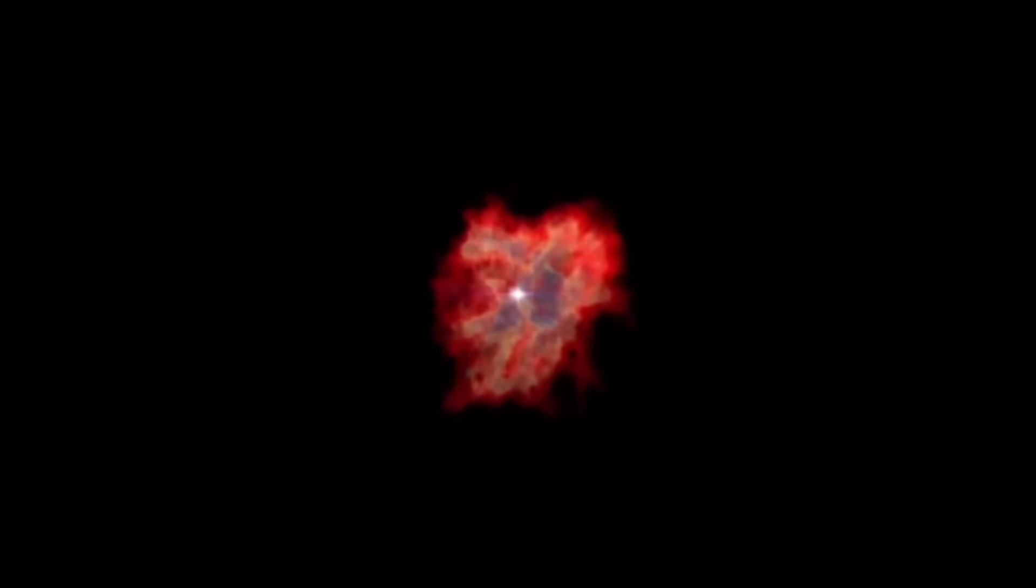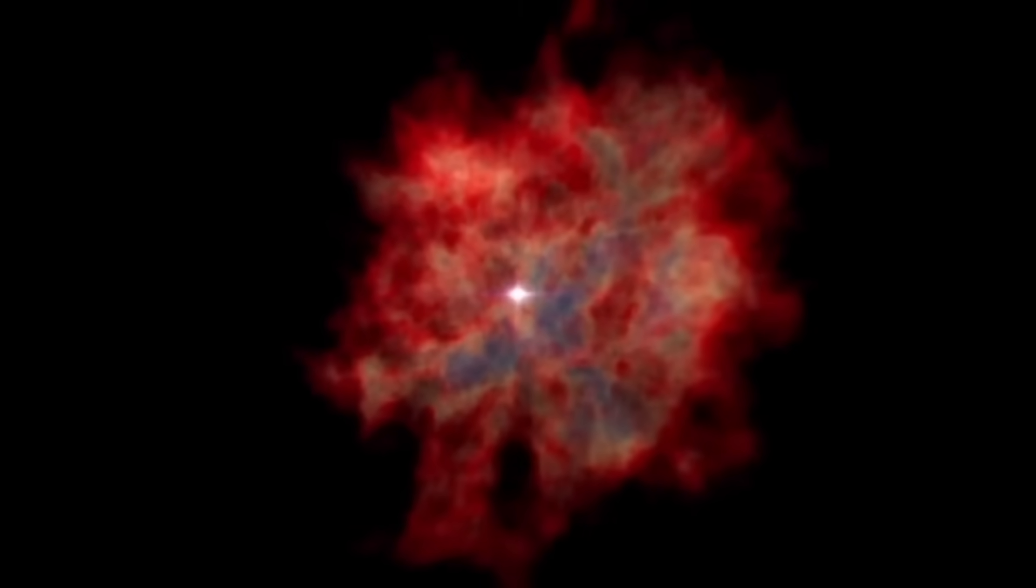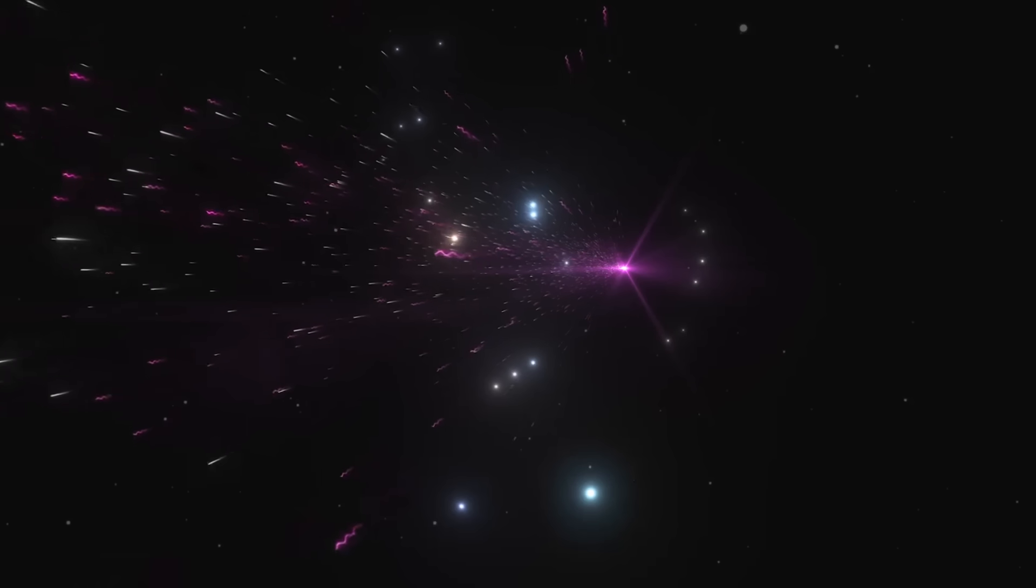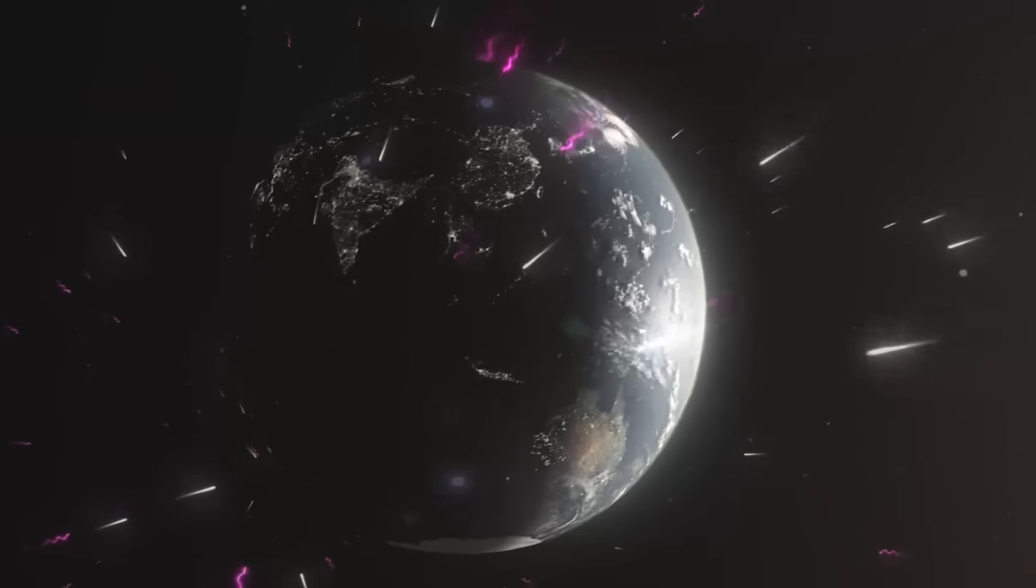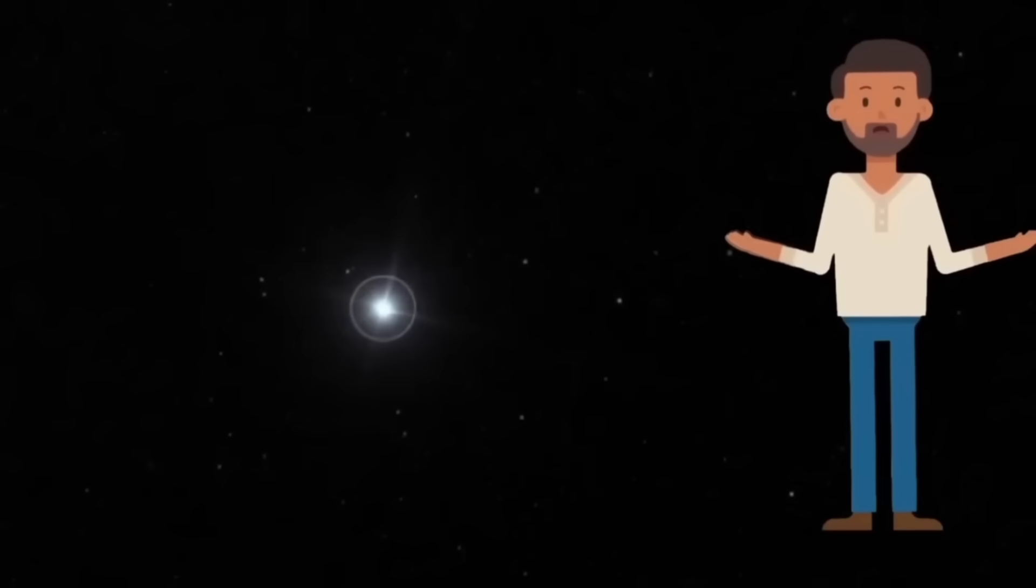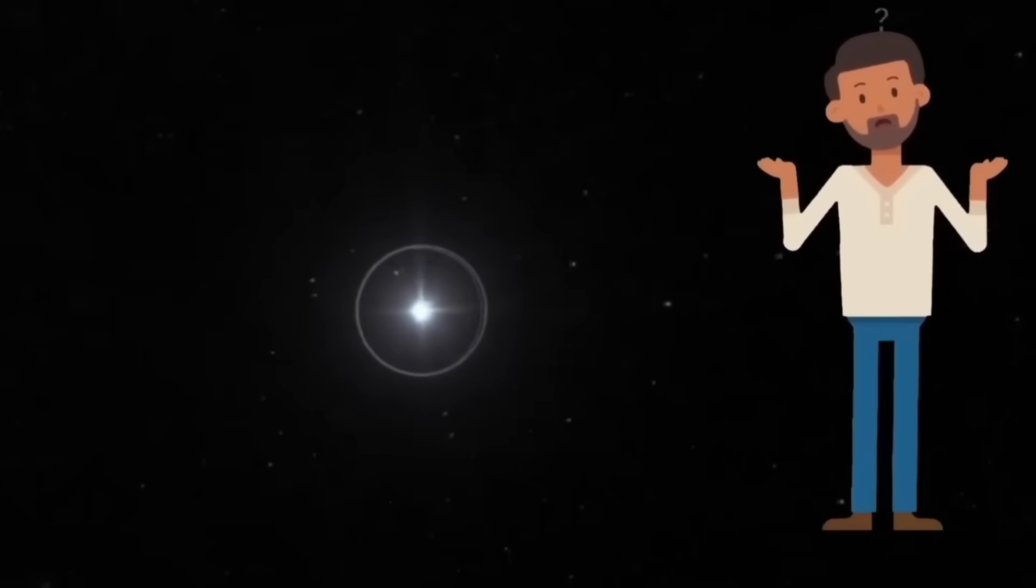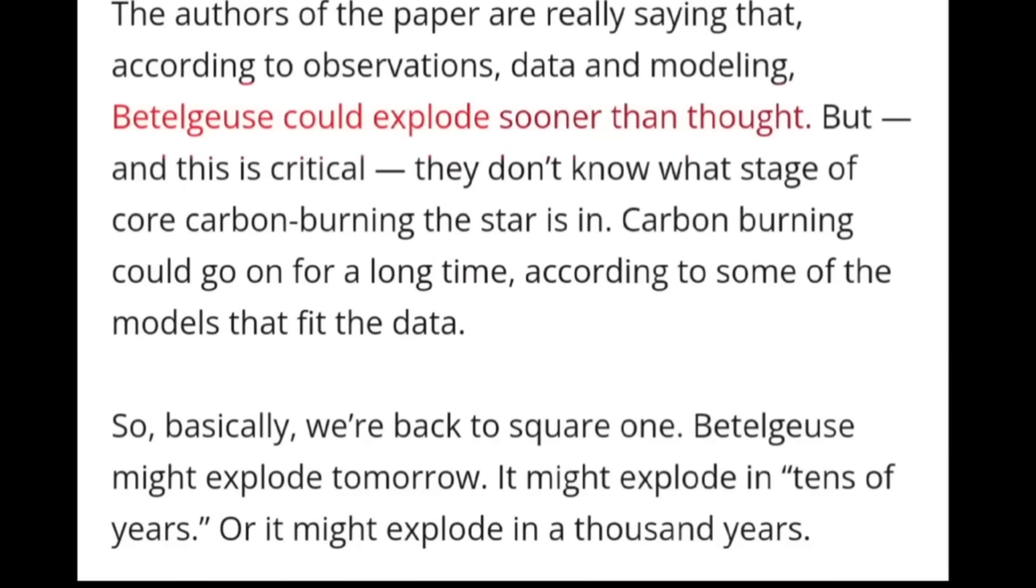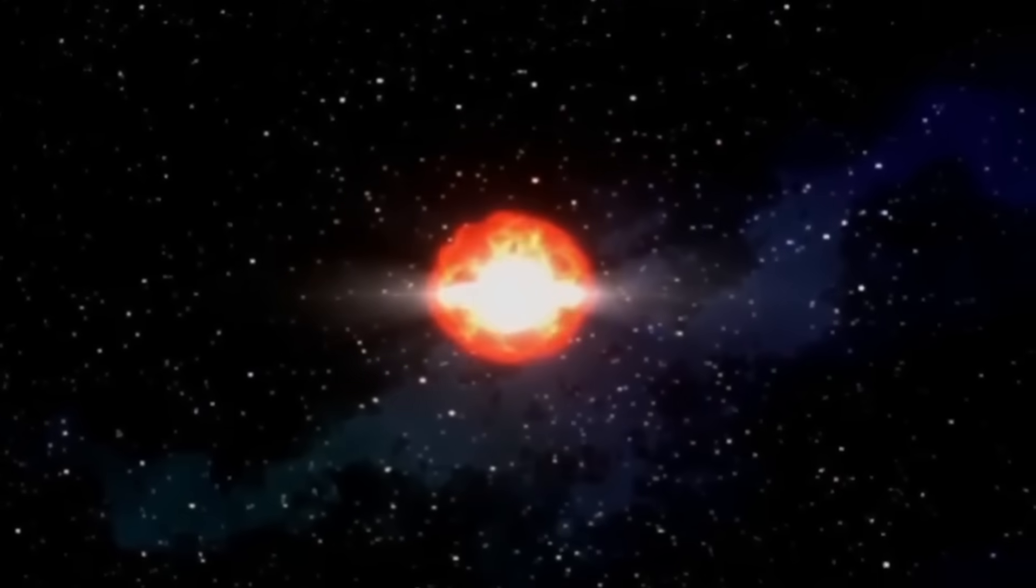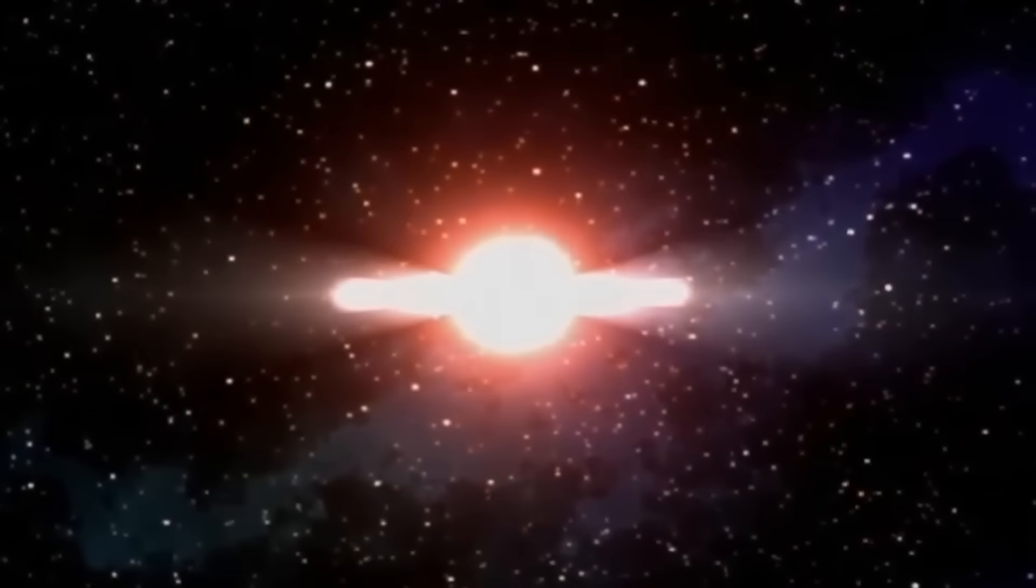If Betelgeuse had already exploded in a supernova within the last 600 years, the light from that explosion would still be traveling towards us. In other words, it's possible that Betelgeuse has already exploded centuries ago, and we could see the explosion at any time, even tomorrow.